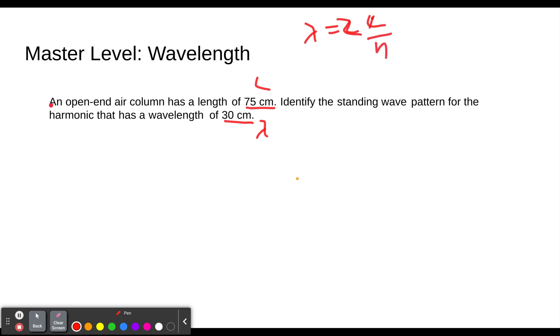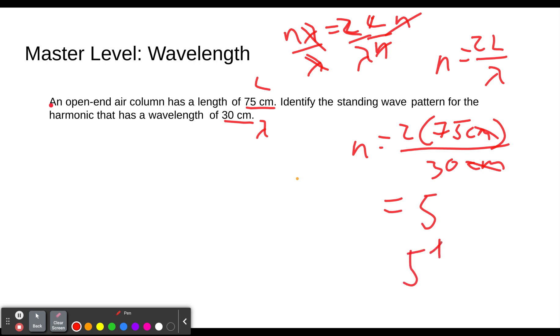If we are trying to solve for N, which harmonic that is, we need to get N in the numerator, out of the denominator. We divide both sides by lambda, by our wavelength. And we get N equals 2L over lambda. So we can plug into that. N equals 2 times 75 centimeters divided by 30 centimeters, the wavelength. Centimeters cancel. We don't have any units left. 2 times 75 is 150. 150 divided by 3 is 5. And so that means we are at our fifth harmonic.